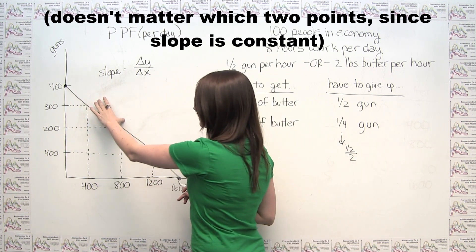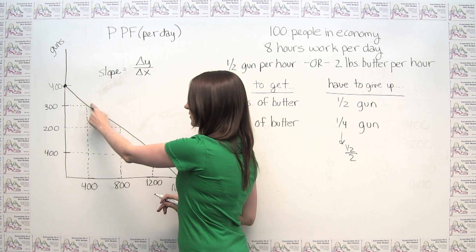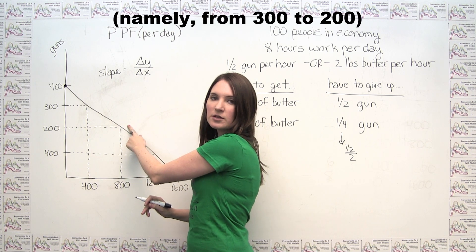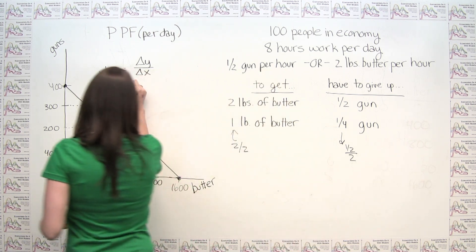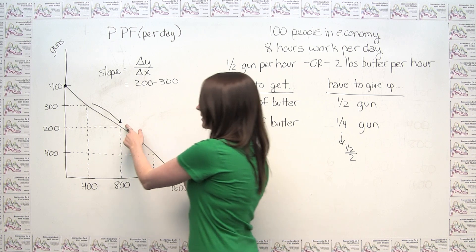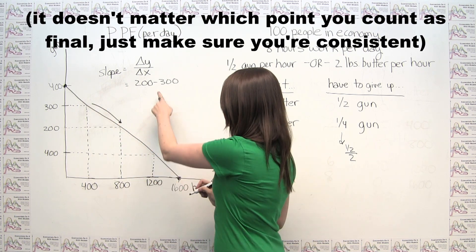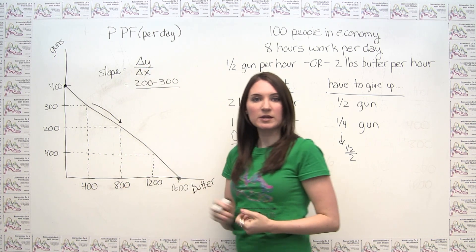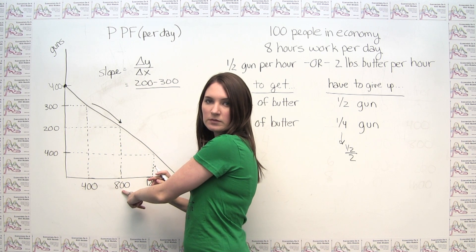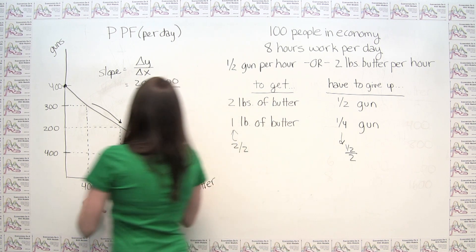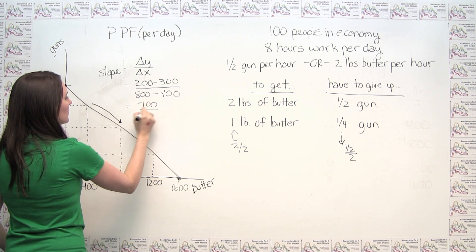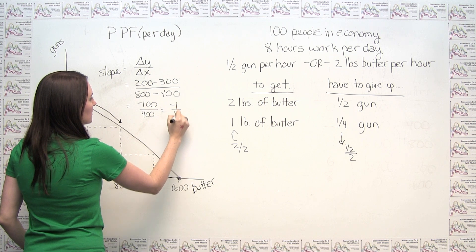Let's take these 2 points here. The change in y going from this point to this point is just negative 100, because we've gone down by 100. Alternatively, we can think about change in y as final minus initial, so it's just 200 minus 300, counting this point as the final and this as the initial. Then for our change in x, going in the same direction, x went from 400 to 800, so final minus initial gives us 800 minus 400. This gives us negative 100 over 400, or negative one-fourth.